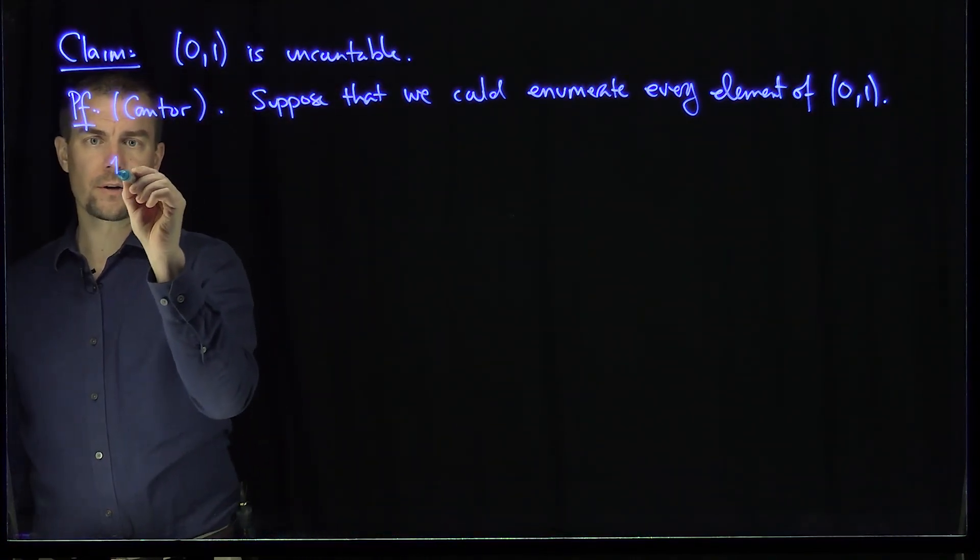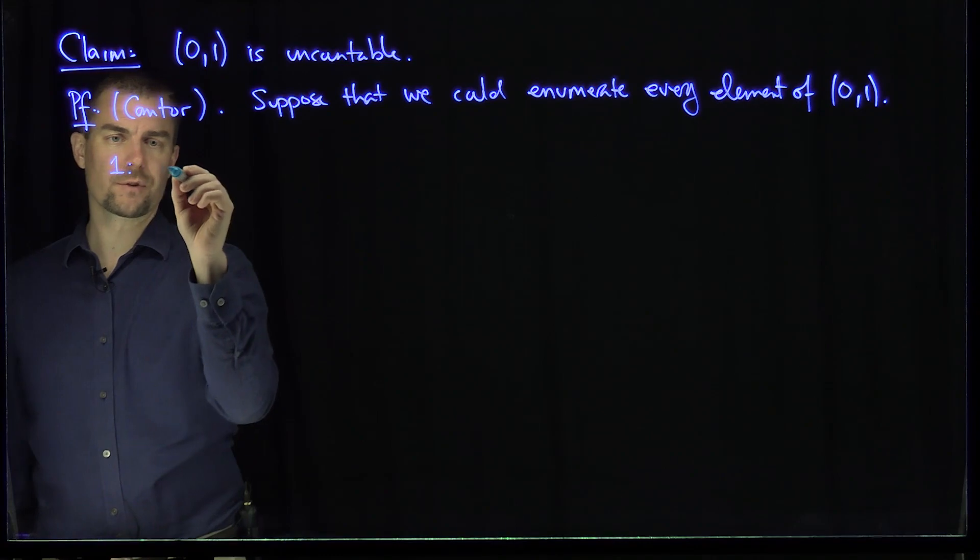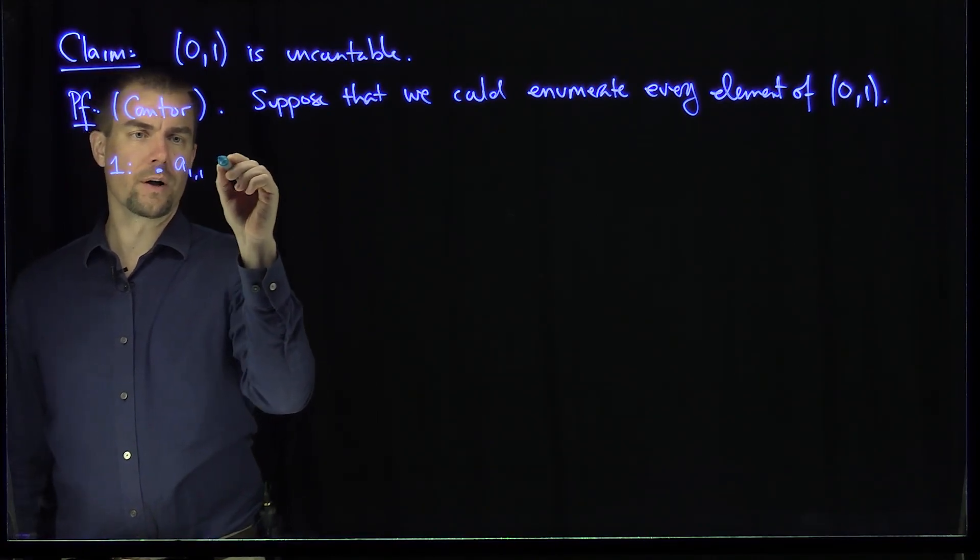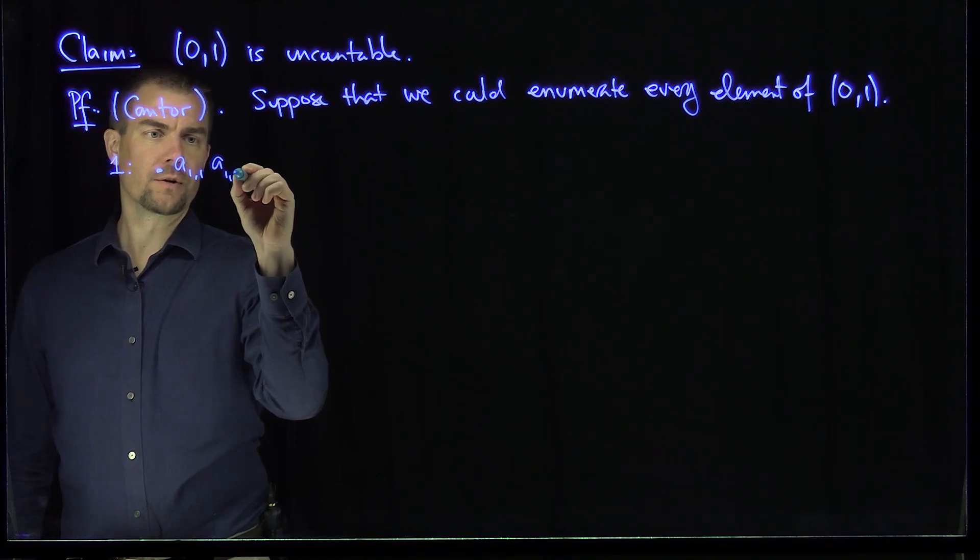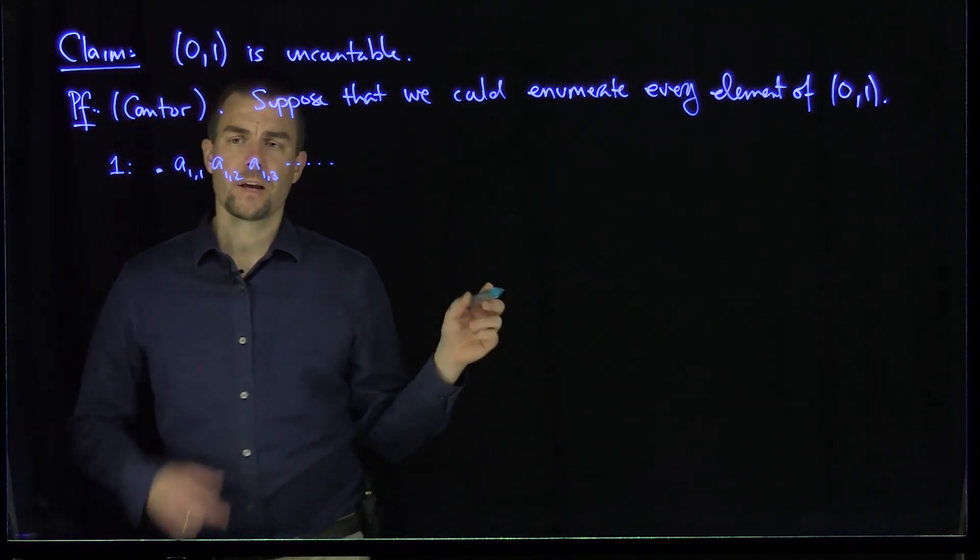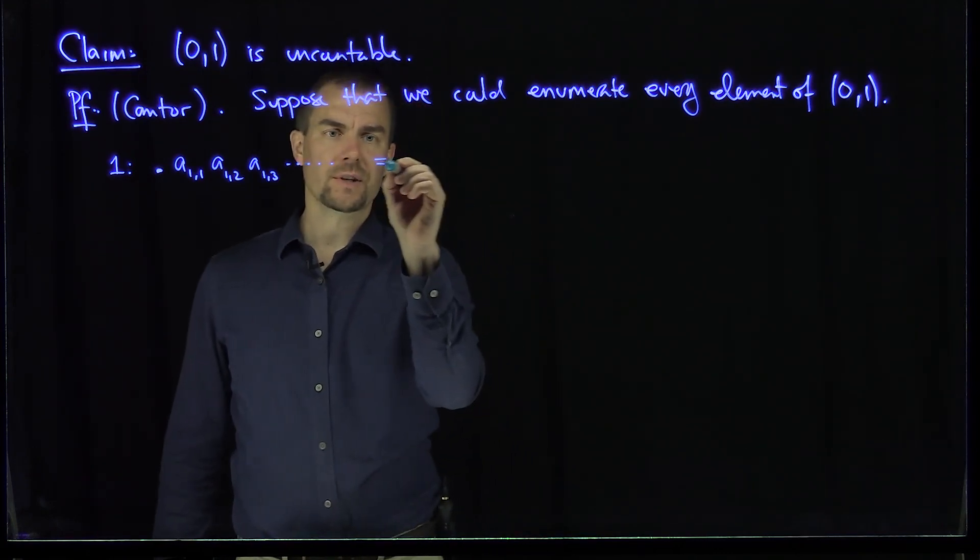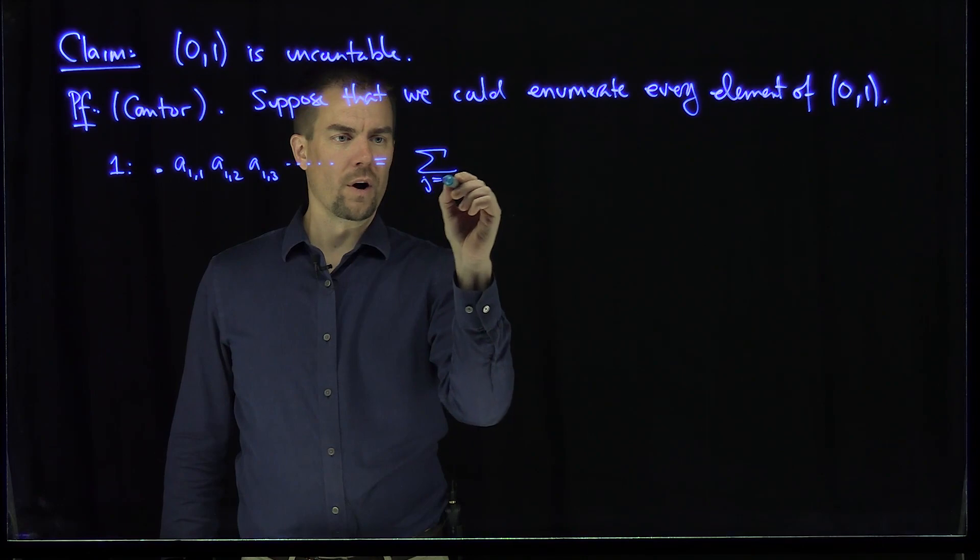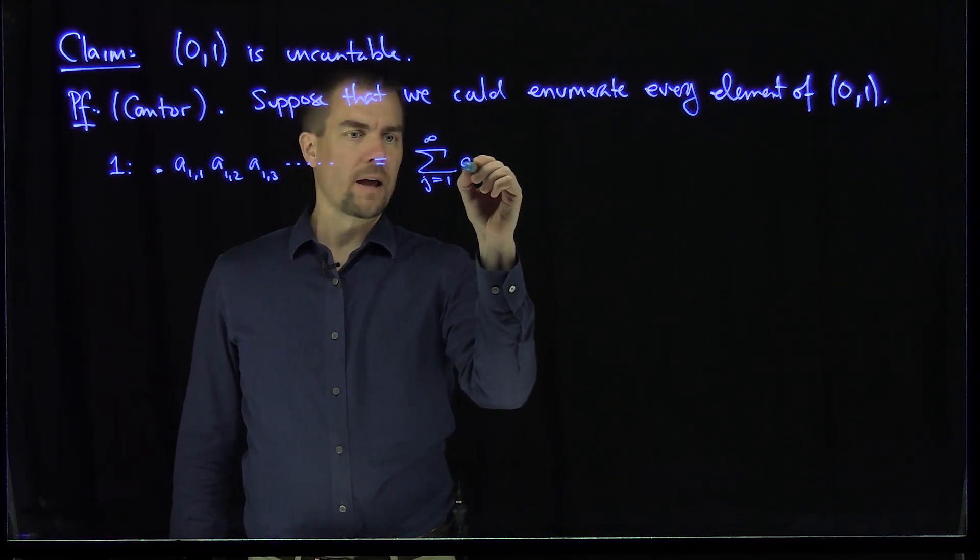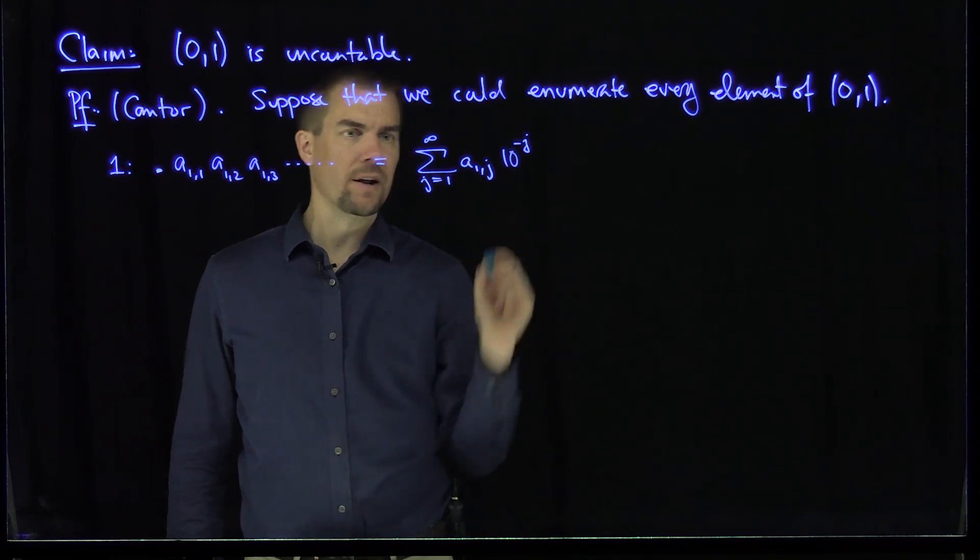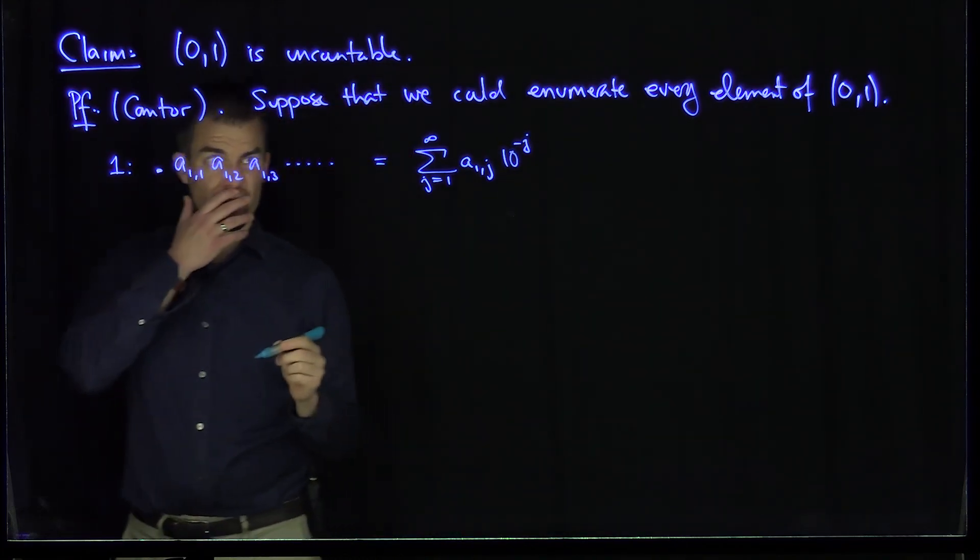I'm going to use the fact that every x between 0 and 1 has at least one decimal expansion. So we can write down an enumeration. The first element will look like point a11, a12, a13, etc. This a11 term is exactly equal to the sum j goes from 1 to infinity of a1j times 10 to the power negative j.